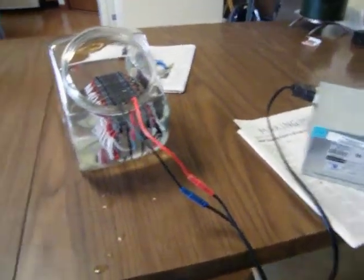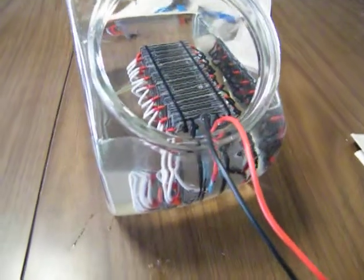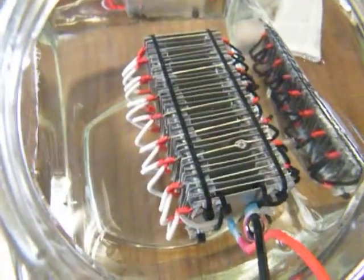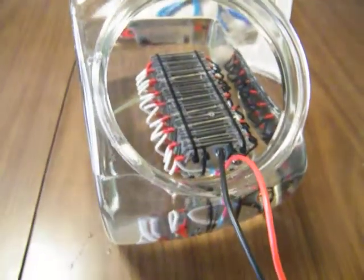Ok, here we have my HHO generator. It is a 32 cell aluminum plate. It took 3 hours to make.